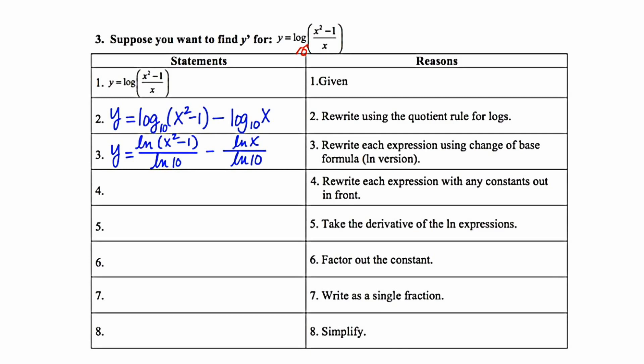In step 4 we're asked to rewrite each expression with the constant out in front. So we've got two terms here and 1 over ln 10 is just a constant. So I'm going to write that out in front in each of those terms.